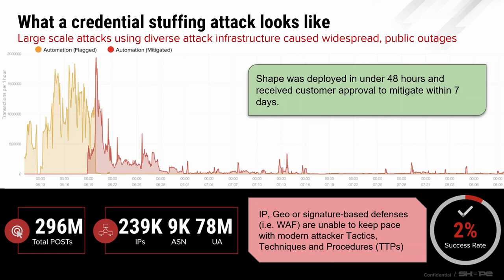Here we have an example of a credential stuffing campaign targeting a Canadian financial institution — one of the big five. There's a massive attack surface: 300 million login events from almost 240,000 IP addresses, thousands of different networks, and apparently 78 million different device types. As you probably know, there are only a couple hundred legitimate user agent strings, so 78 million is an astronomical number — they're clearly using randomization to change up the user agent.